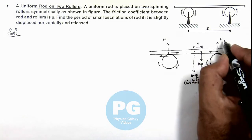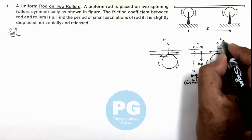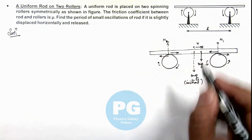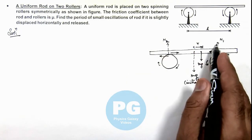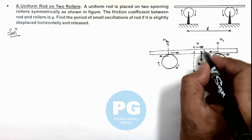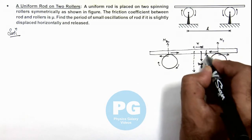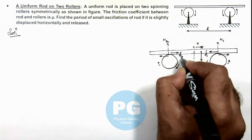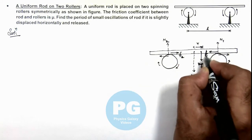Due to which this normal reaction will become N₁ and this will become N₂, where N₁ would be certainly greater than N₂ because mg is shifted toward the rightward roller. So in this situation the friction will also be, this is F₁ and this is F₂ which are acting on the rod.